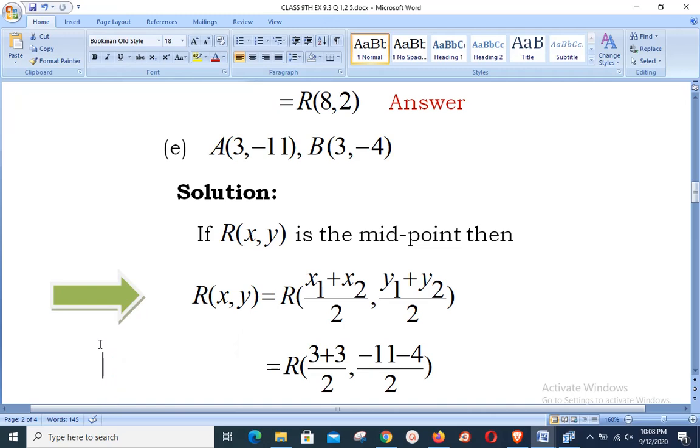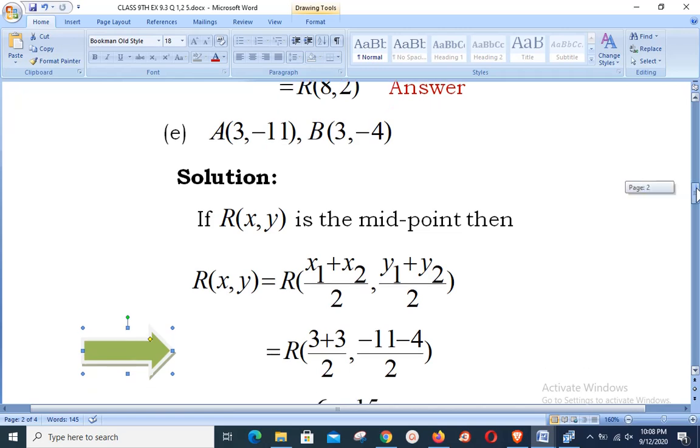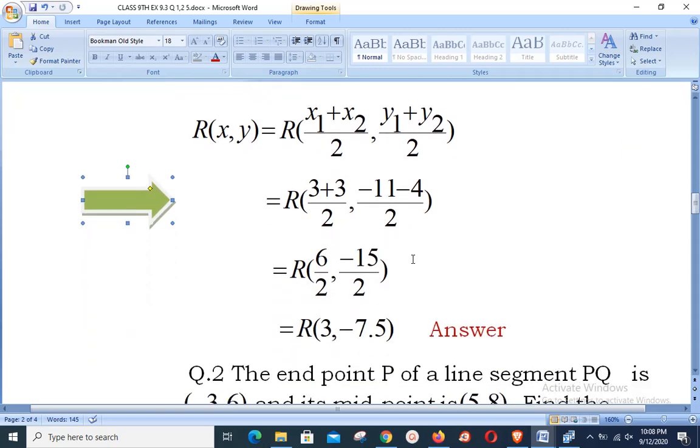Looking for the values of x and y, we have R((3+3)/2, (-11-4)/2), that is R(6/2, -15/2). Simplified form gives us R(3,-7.5) as the answer. Hope you understand and practice the midpoint formula.